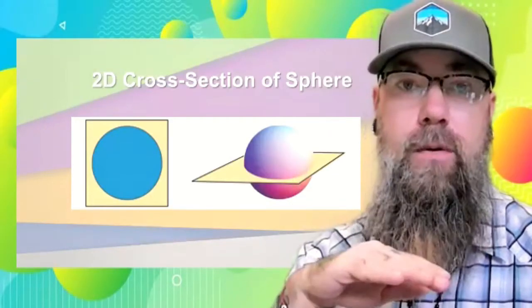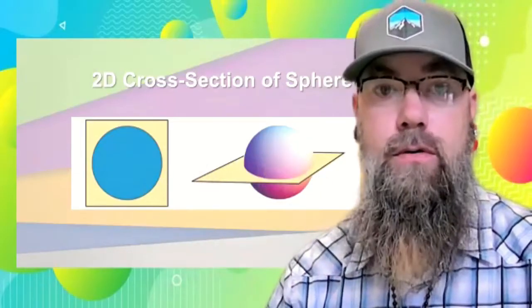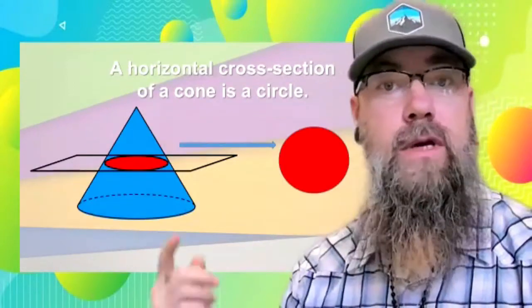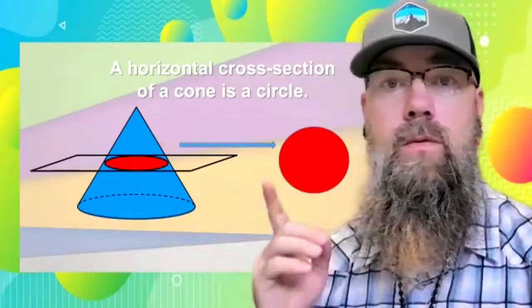Next up for an example we have a sphere. If we take a 3D cross-section either horizontally or vertically, either time we'll get a circle for a cross-section. Next up we have a cone. If we take that 3D shape and take a horizontal cross section, we will get a circle.